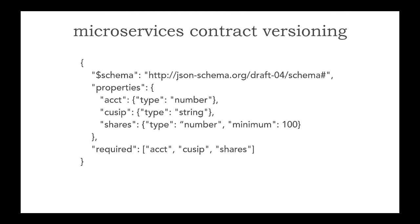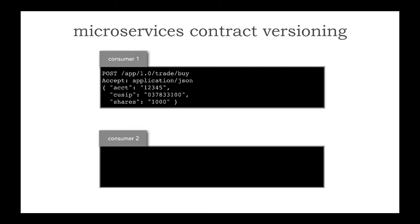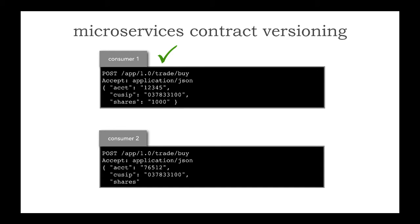I've significantly simplified this for this example, but notice all three of these are required. So if I have two consumers that want to actually place this trade, notice I've got a POST for that 1.0 trade buy. I'm accepting JSON — account number 12345, QCIP 037833100 which is Apple, for 1000 shares. And of course this works perfectly fine. I have another consumer that wants to trade 200 shares for account 76512, and this works perfectly fine as well.